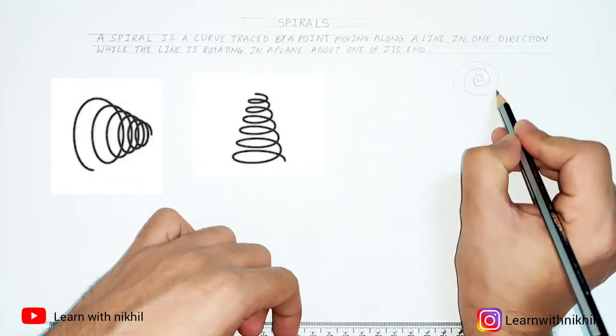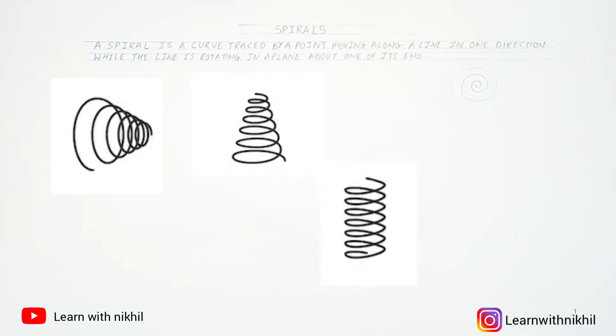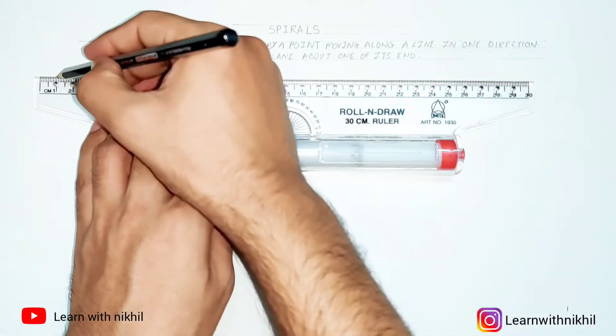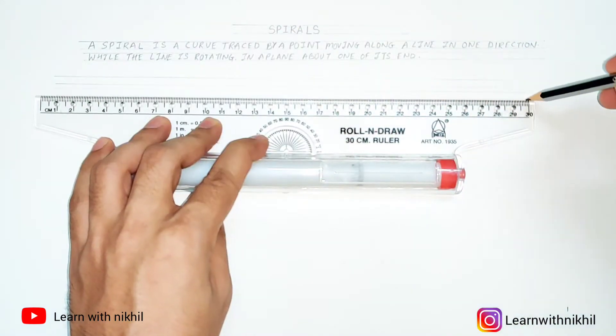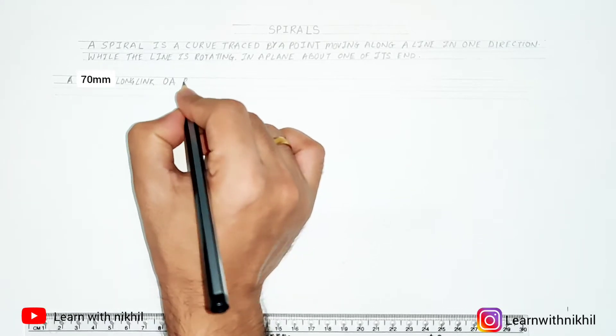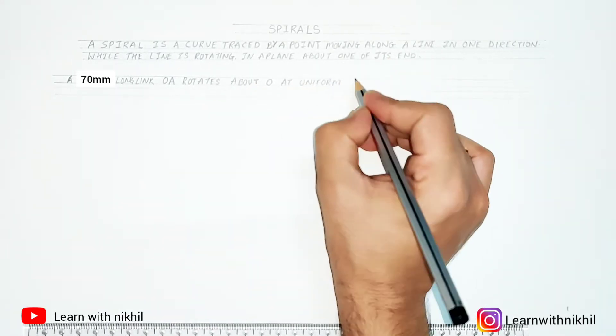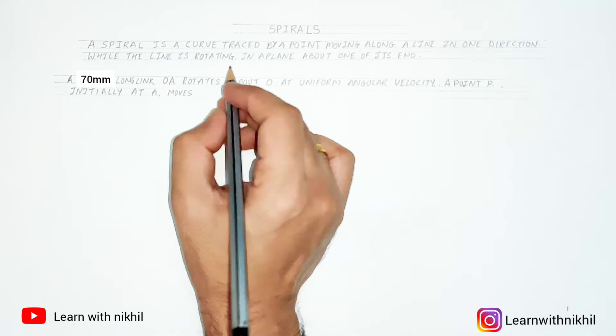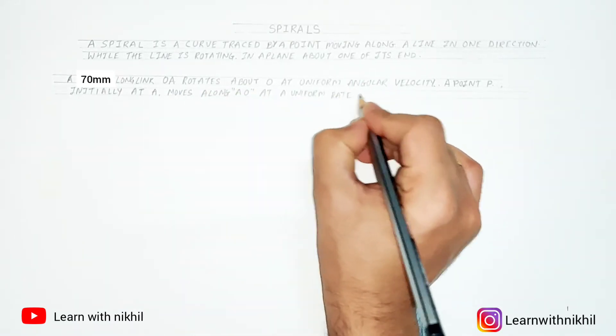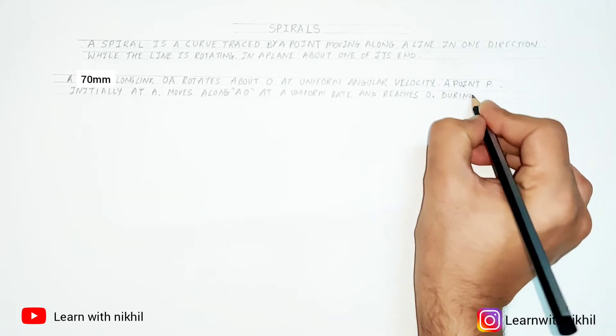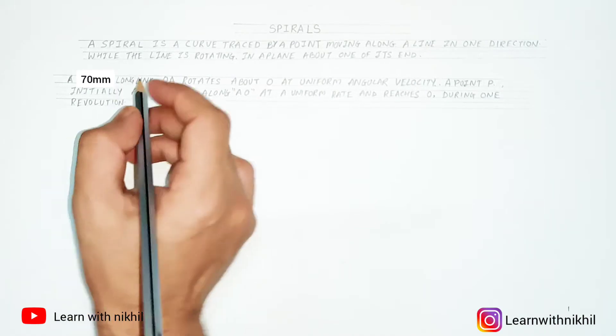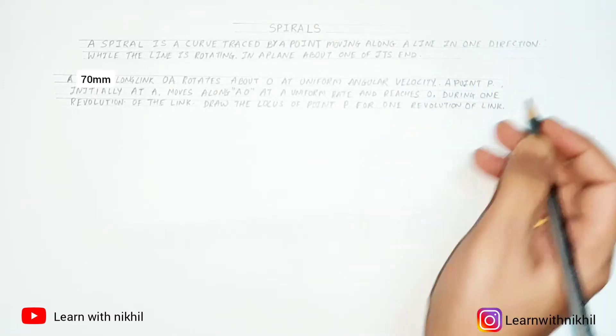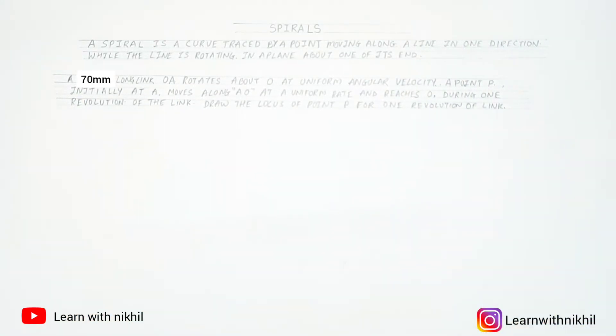Here are the types of spiral where one end is bigger, smaller, or both ends are of similar radius. We have considered a sum where it says a 70 millimeter long line OA rotates about O at uniform angular velocity. A point P initially at A moves along OA at a uniform rate and reaches O during one revolution of the line. Draw the locus of point P for one revolution of line.